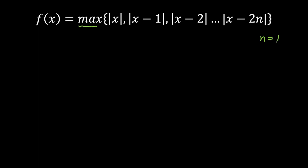The moment I take n equal to 1, I will have a limited set of functions: mod of x, mod of x minus 1, and mod of x minus 2. I am going to draw these three graphs and show how to calculate the maximum. Once I get the maximum, I will tell you the logic for how it works for mod of x minus 2n.